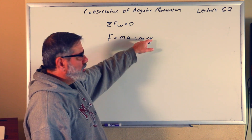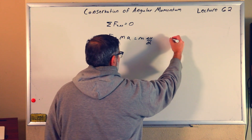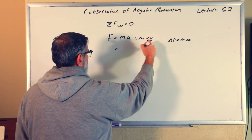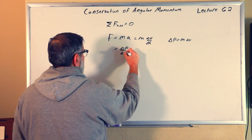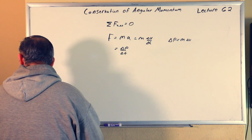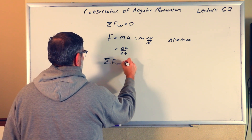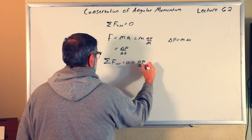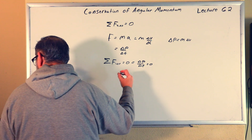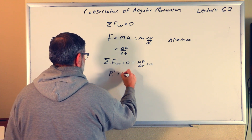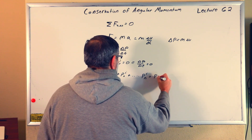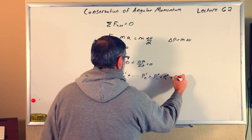Now I'm going to put M and delta V together and write delta P — change in momentum — equals M delta V. So I can replace M delta V with delta P over delta T. That says force equals the change in momentum per change in time. If the sum of the forces is zero, then delta P over delta T is zero, meaning there's no change in delta P. So: P1 initial plus P2 initial plus ... plus Pn initial equals P1 final plus P2 final. This is the conservation of linear momentum.